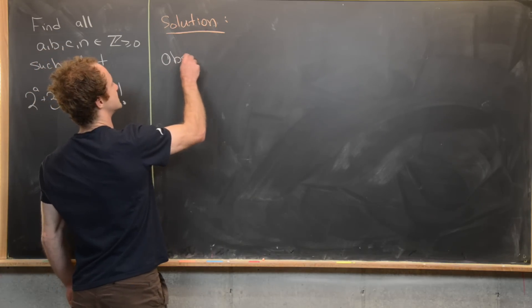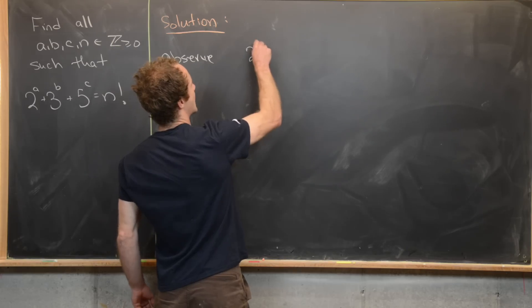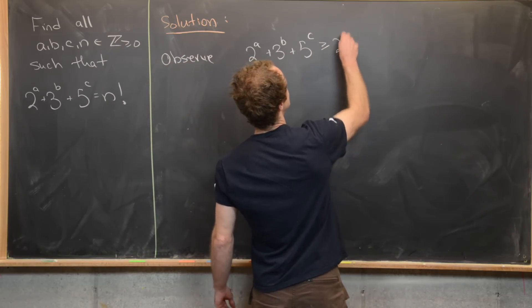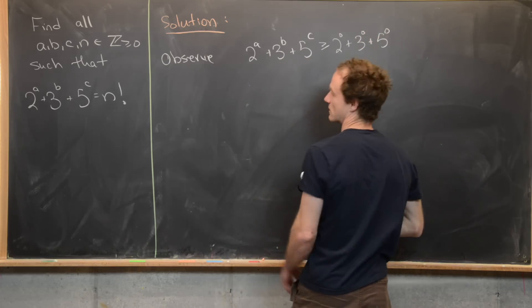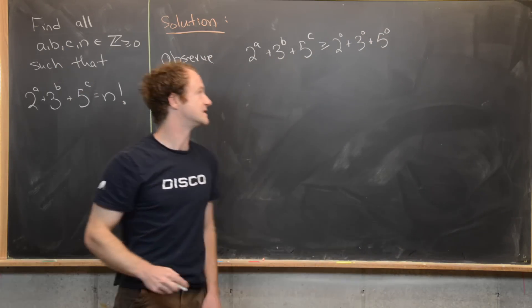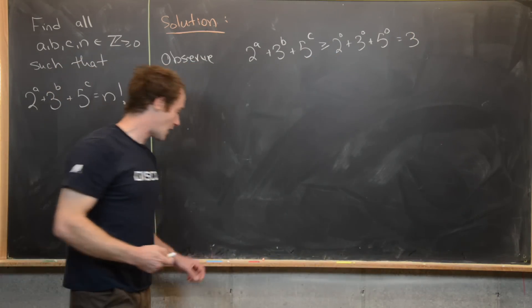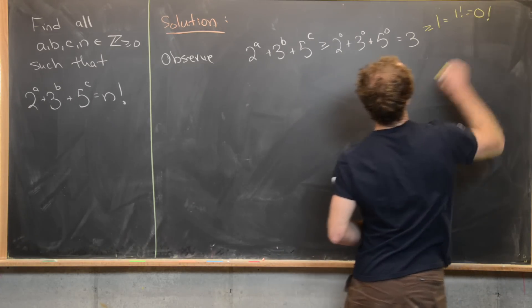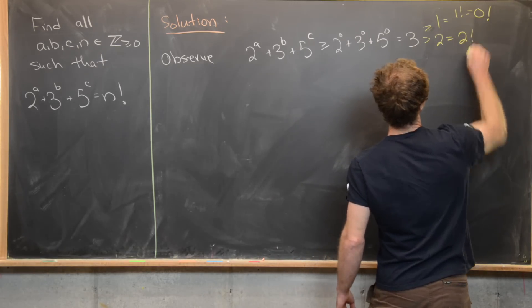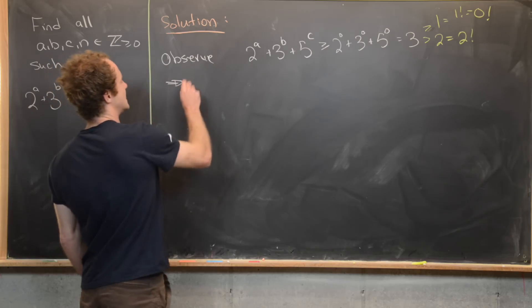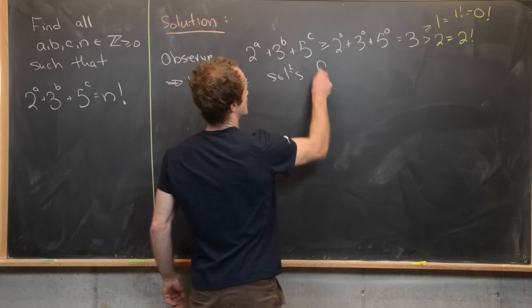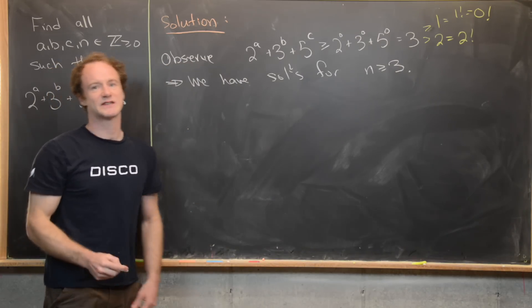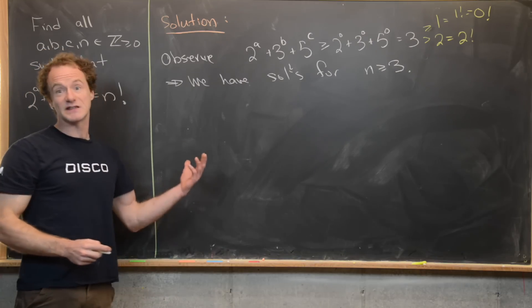The first thing I want to observe is the following inequality: 2^a + 3^b + 5^c is always going to be greater than or equal to 2^0 + 3^0 + 5^0, given that a, b, and c are always bigger than or equal to 0. That equals 3. Now notice that 3 is bigger than 1, which equals 1 factorial and 0 factorial, and 3 is also bigger than 2, which equals 2 factorial. So that immediately tells us we only have solutions for n ≥ 3; we can't have n equal to 1 or 2.